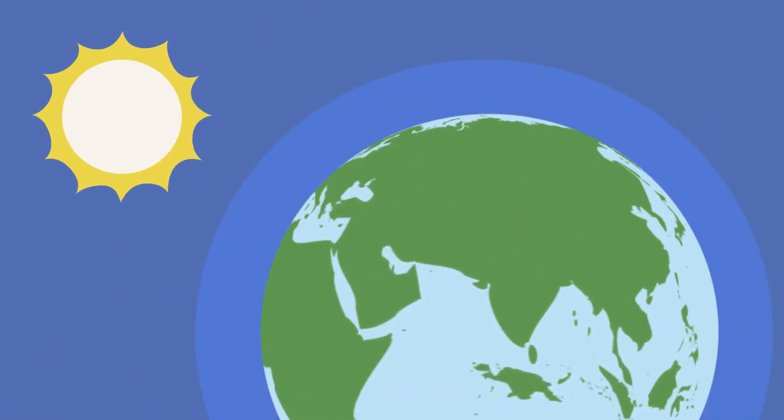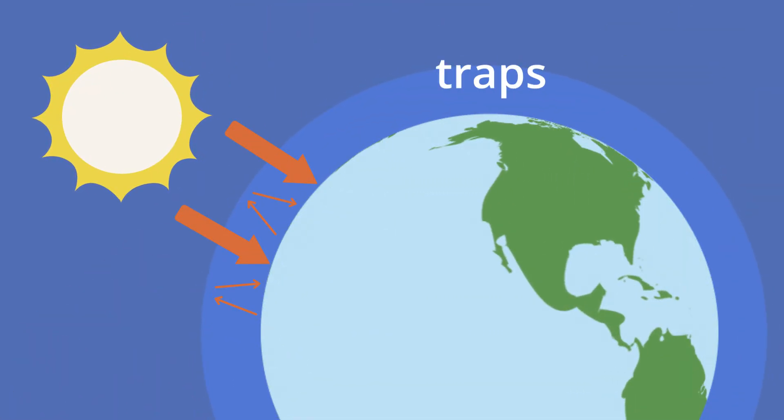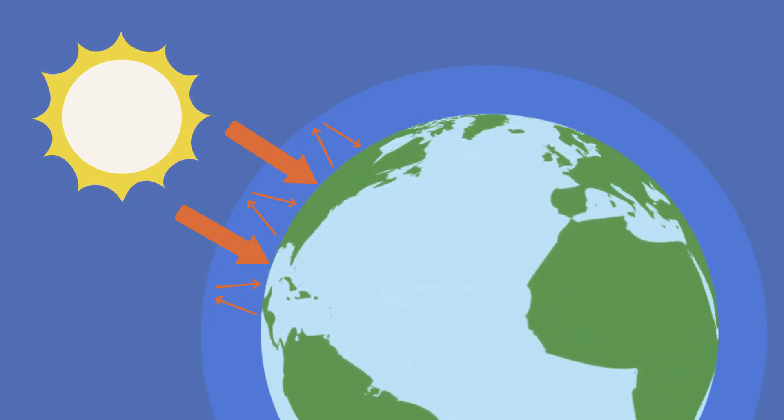Global warming occurs when the Earth's atmosphere traps the sun's heat and blocks it from going to space.